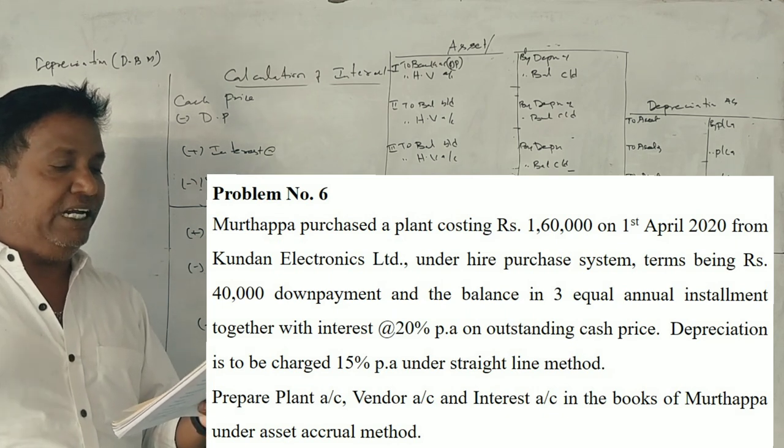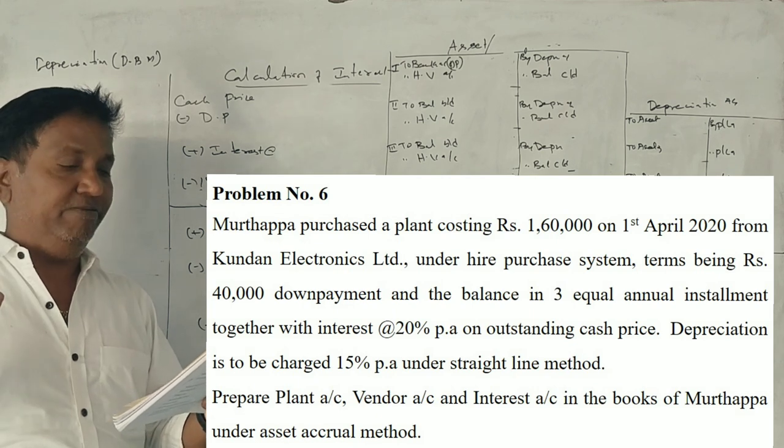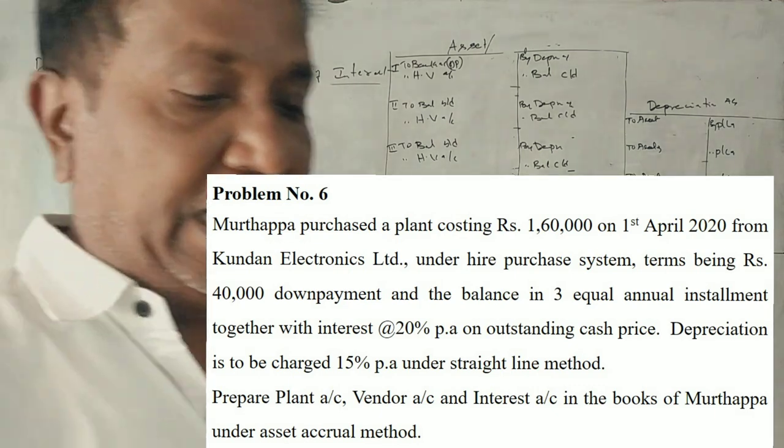Depreciation is to be charged at 15% per annum under straight line method. Prepare plant account, vendor account, and interest account in the books of Murthappa under asset accrual method.